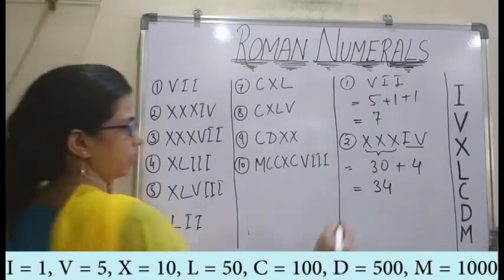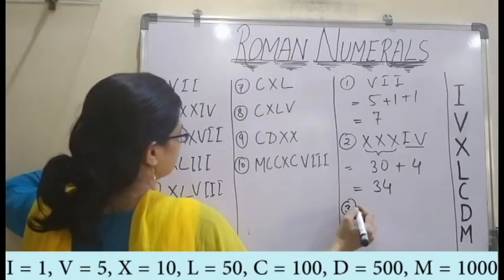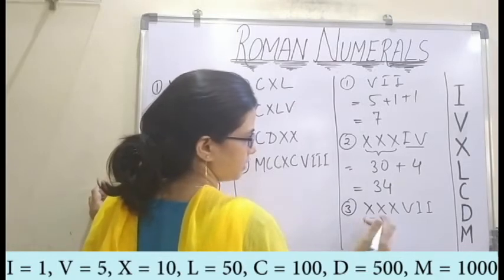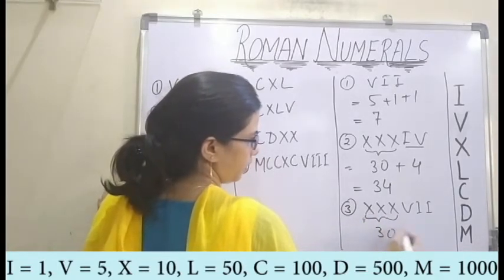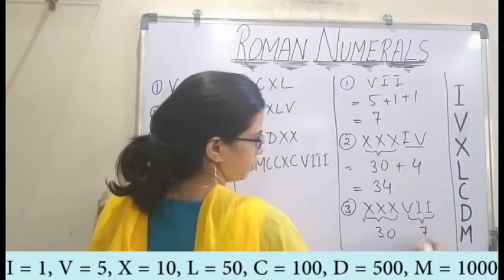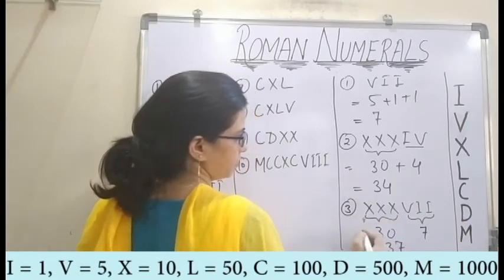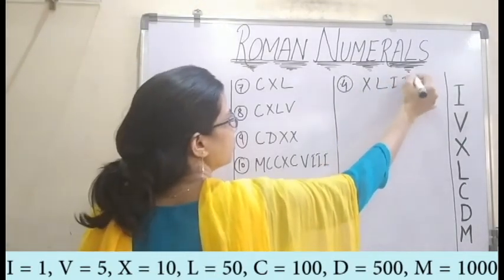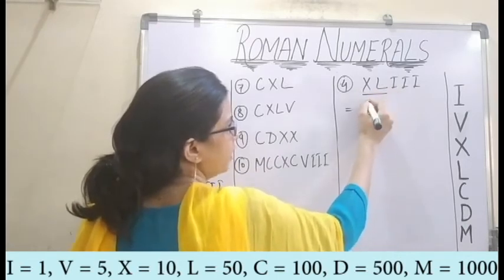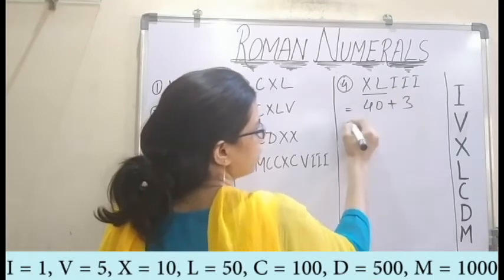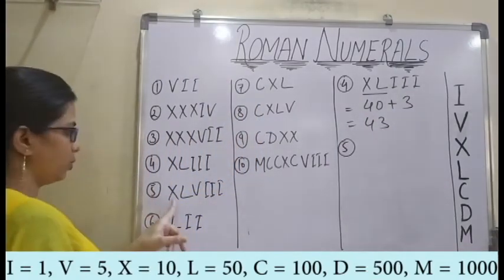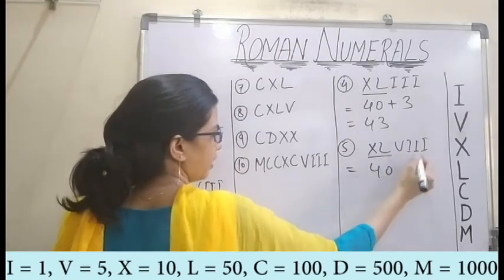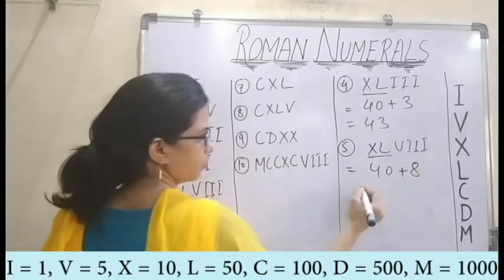Similarly, the third one is XXXVII. XXX stands for 30 and VII stands for 7. So my value is 37. The fourth one is XLII. XL stands for 40 and II stands for 2, so it will be 42. The fifth one is XLVIII. I have XL as 40 and VIII is 8. So we have 48.